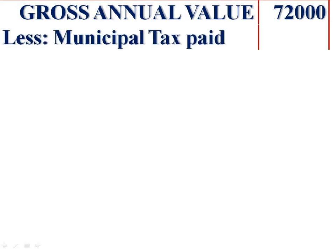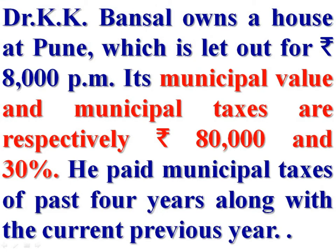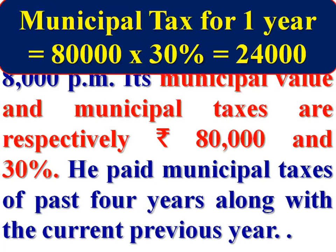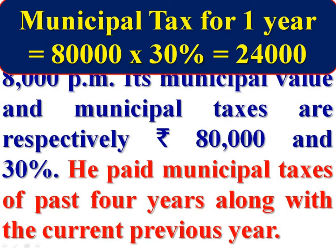From this gross annual value, deduct municipal tax paid by the assessee. Municipal value and municipal taxes are respectively Rs 80,000 and 30%. Therefore, municipal tax is Rs 80,000 × 30% = Rs 24,000. The municipal tax for 1 year is Rs 24,000. He paid municipal taxes of past 4 years along with the current previous year, meaning municipal taxes of 5 years were paid during the previous year.